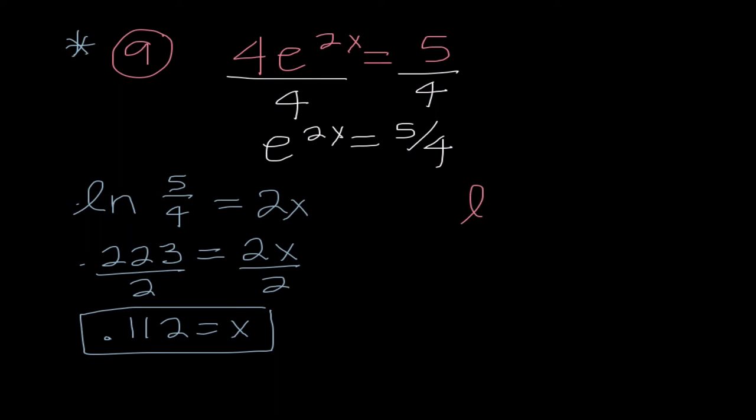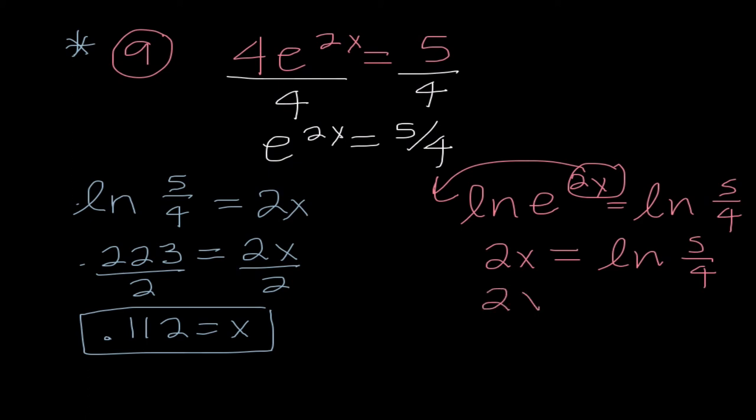If we were using the other method, I might do LN of E to the 2X equals LN of 5 fourths. My 2X goes out in front. And, I know that LN of E is 1, so I'm just going to write 2X equals LN of 5 fourths. So, 2X is equal to .223. When I divide both sides by 2, I get X equals .112.